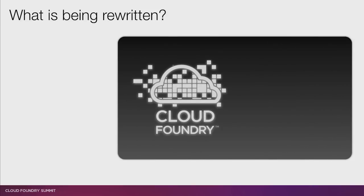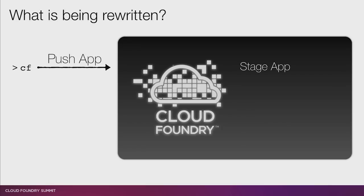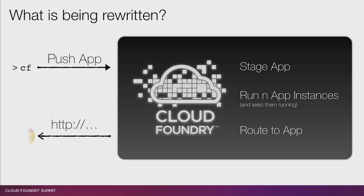So let's dive into what it is that we're rewriting. You can look at Cloud Foundry as a black box, and as a black box, Cloud Foundry's inputs are a developer using CF to push an app. What the black box will do for you is take your app, stage it, run N instances and keep them running, and then emit a route to the app so that your users can connect through the Internet with a browser.